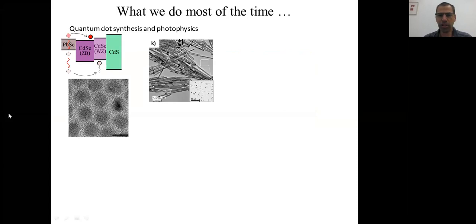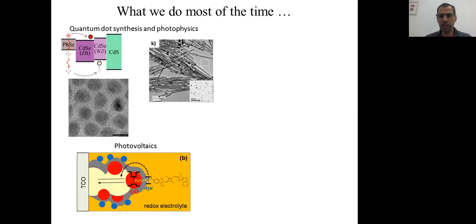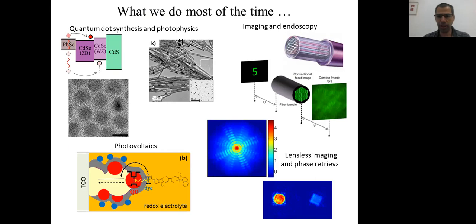A few words about my group, although Volkan presented it very well. We do a lot of things that all have to do with light and the nanoscale: quantum dot synthesis, semiconductor quantum dot synthesis and photophysics — this is where I got to know Volkan very well — applications for photovoltaics, imaging and endoscopy, imaging through multi-core fiber bundles, lensless imaging, phase retrieval, and more recently super resolution microscopy.